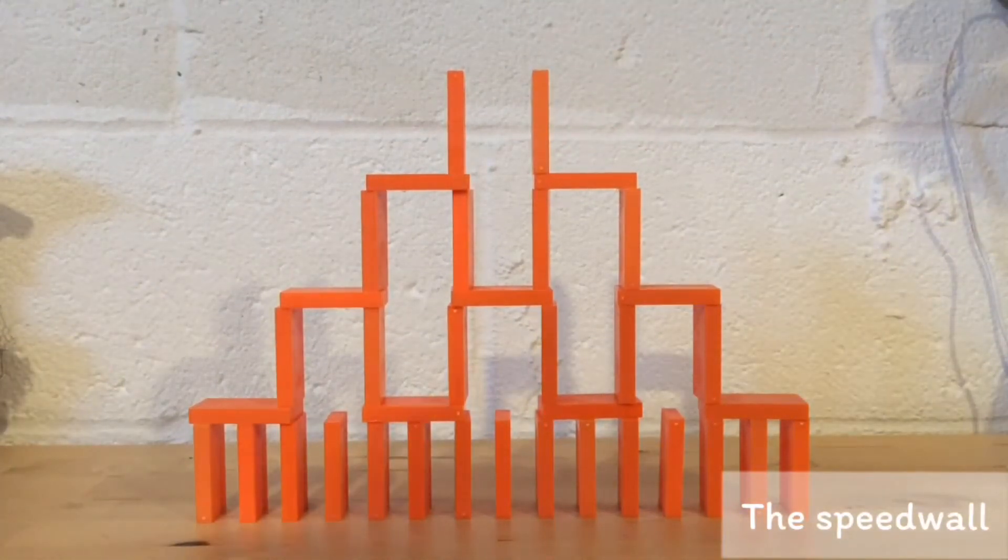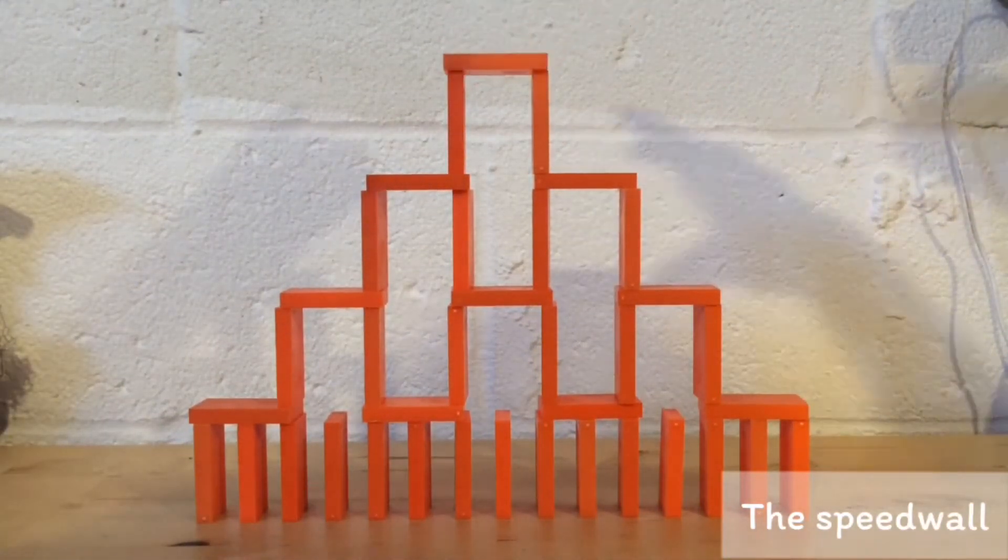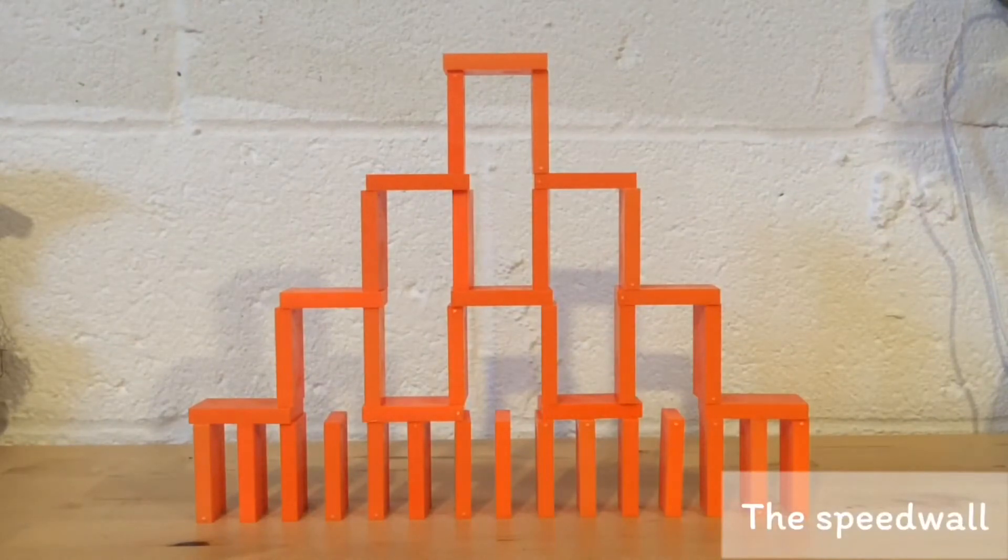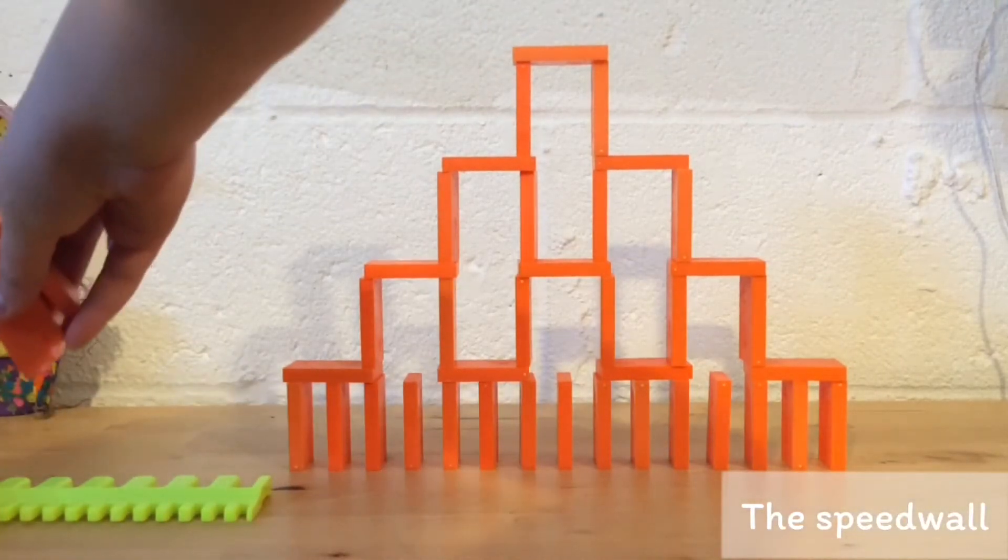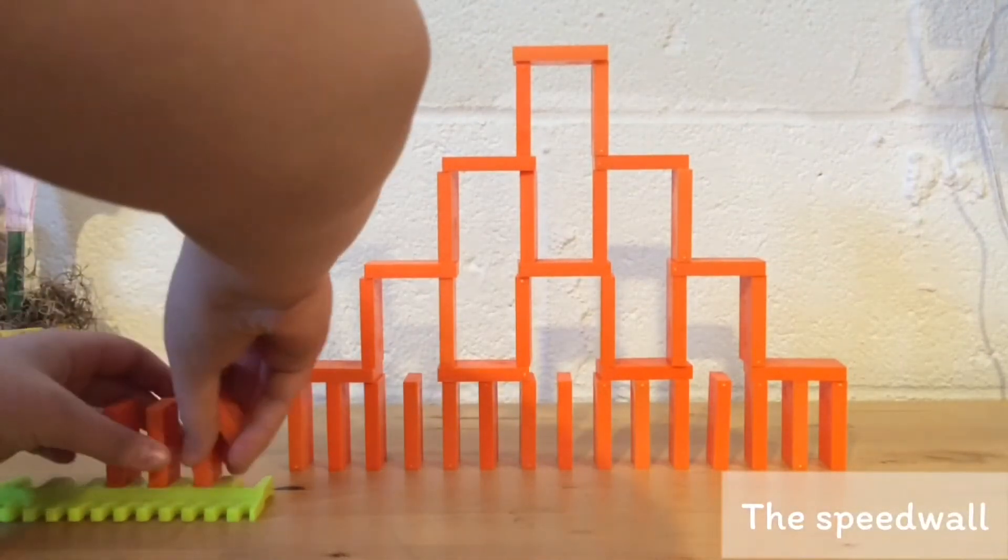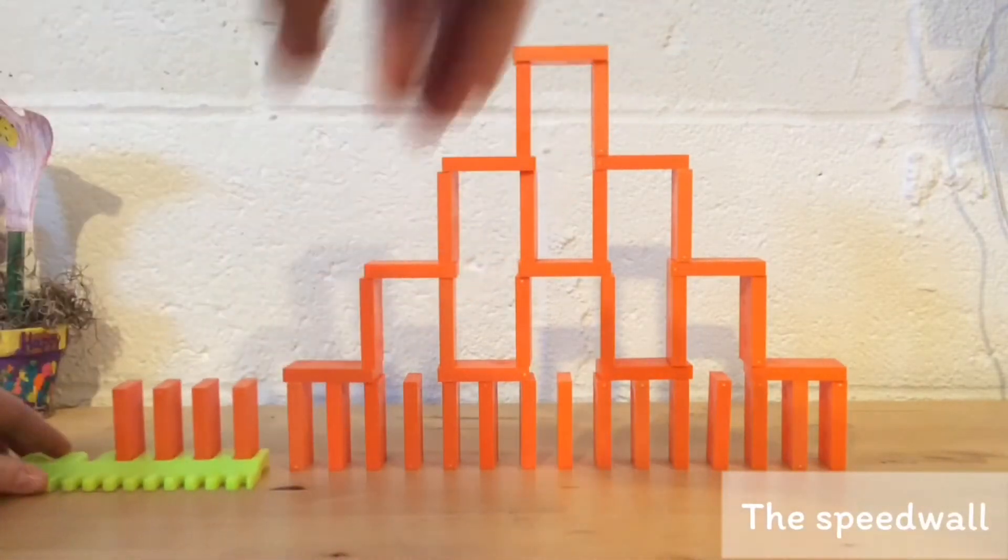This structure is called a speed wall because as you can imagine it falls pretty fast. If you want to lead up to the structure, you can just add your spacer here and add in some dominoes.